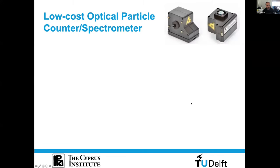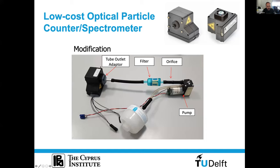One of the first instruments we started working with is the low-cost optical particle counter from AlphaSense. The AlphaSense OPC comes with a fan, so to mount it on a UAV and ensure constant flow rate, you have to modify it. We removed the fan, adjusted an outlet connected to a pump with protective filters, and maintained constant flow rate using a critical orifice. In that way, you can make this relatively low-cost sensor an operational instrument deployable on board a UAV.